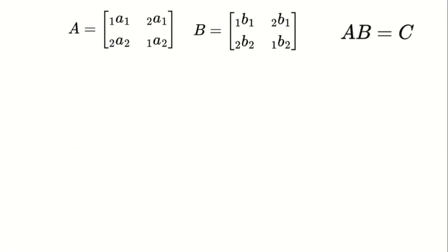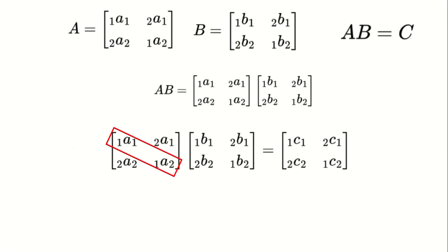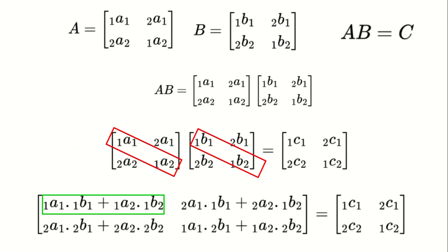To compute their product matrix C, start by multiplying the first diagonal of A with the first diagonal of B. This gives the first element of the first diagonal of C. Then, multiply the first diagonal of A with the second diagonal of B to get the second element of the first diagonal of C.